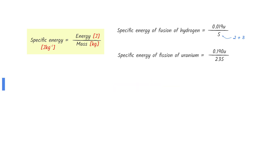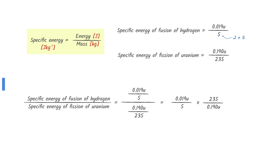The specific energy can be found by dividing energy by mass. The specific energy of fusion of hydrogen would be 0.019u divided by 5, where 5 comes from adding the masses of hydrogen-2 and hydrogen-3 together. The specific energy of fission of uranium would be 0.190u divided by 235. We do not need to worry about units since we are finding the ratio of these two. Dividing 0.019u by 0.190u leaves 10 in the denominator, and dividing 235 by 5 gives approximately 50 in the numerator. 50 divided by 10 gives us 5.